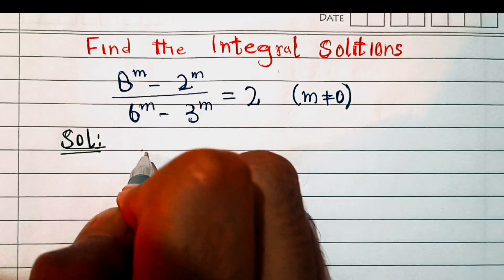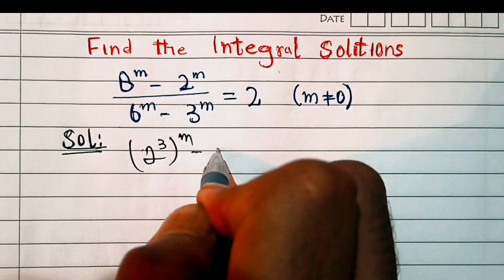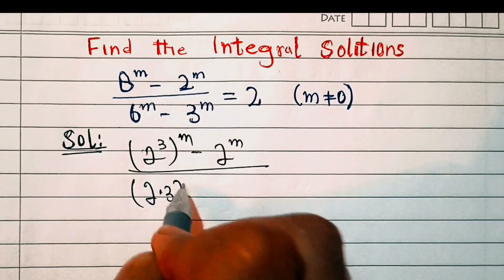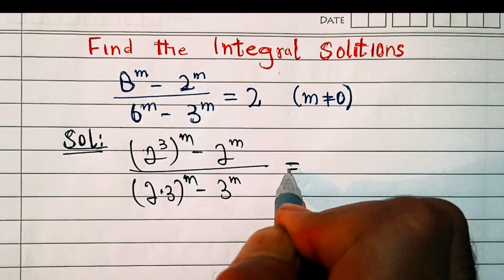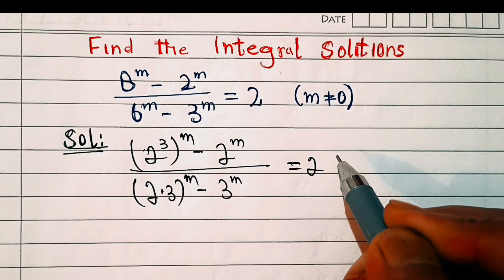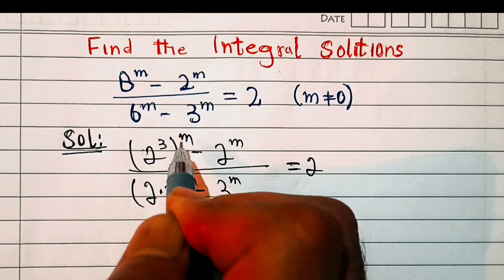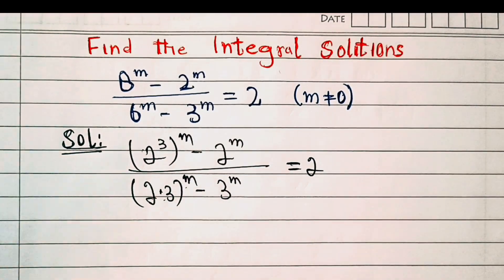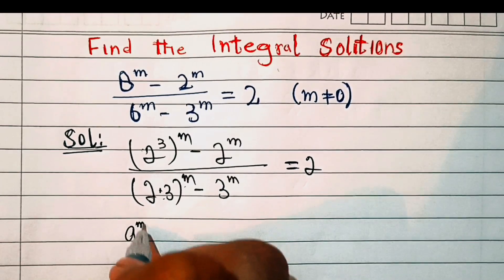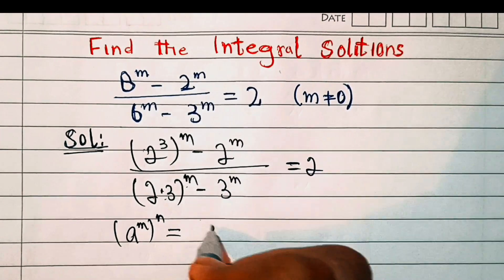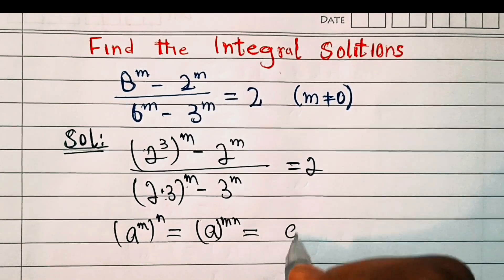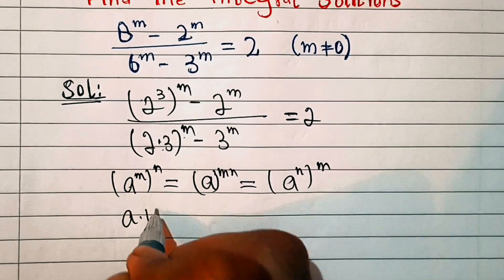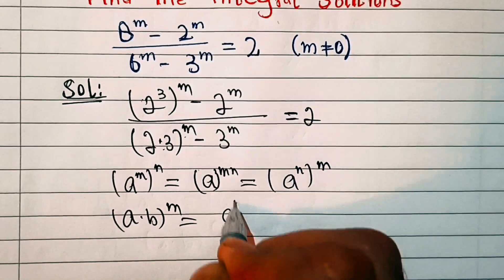In the first step we write 8^m as 2^(3m) minus 2^m, divided by 6^m written as (2·3)^m minus 3^m, equal to 2. Now 2^(3m) is of the form a^(m·n) and (2·3)^m is of the form (a·b)^m. So we will apply two formulas: first, a^(m·n) = (a^m)^n; and second, (a·b)^m = a^m · b^m.